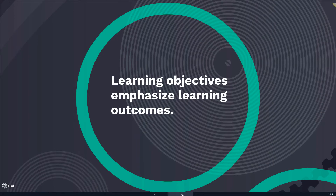Finally, learning objectives emphasize student outcomes. Instructors often state objectives in terms of process or procedure, while learning objectives refer to the end results of instruction. A good learning objective states what a student will know or be able to do with the instruction.